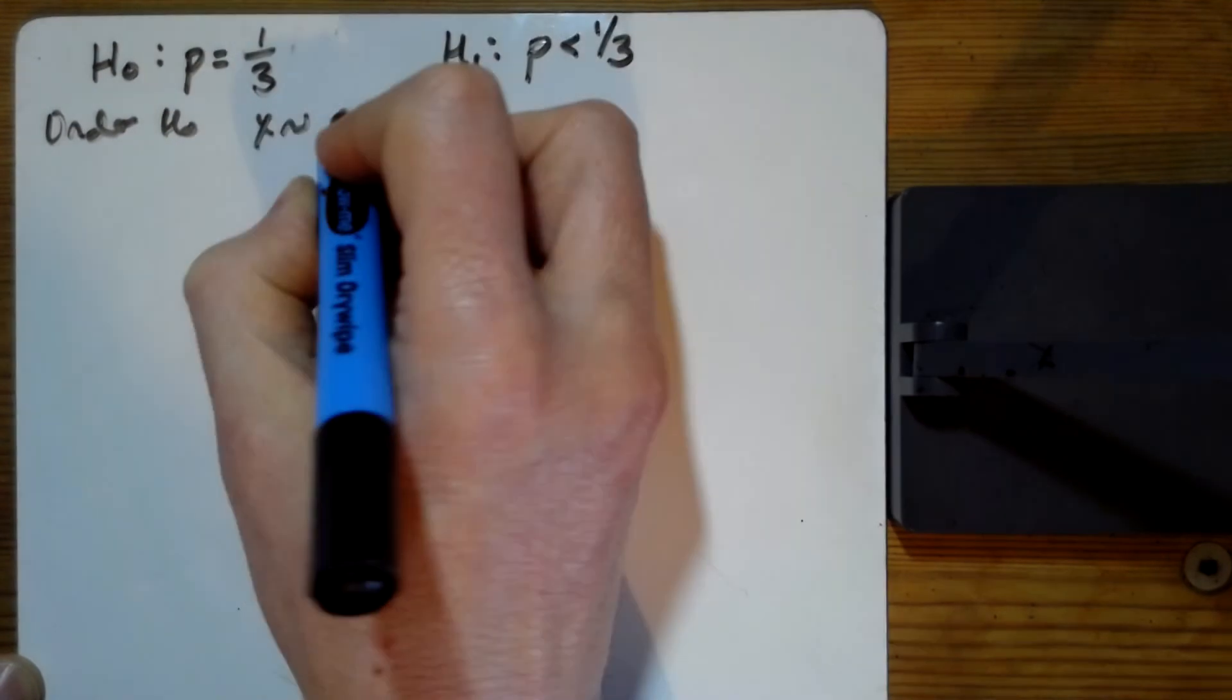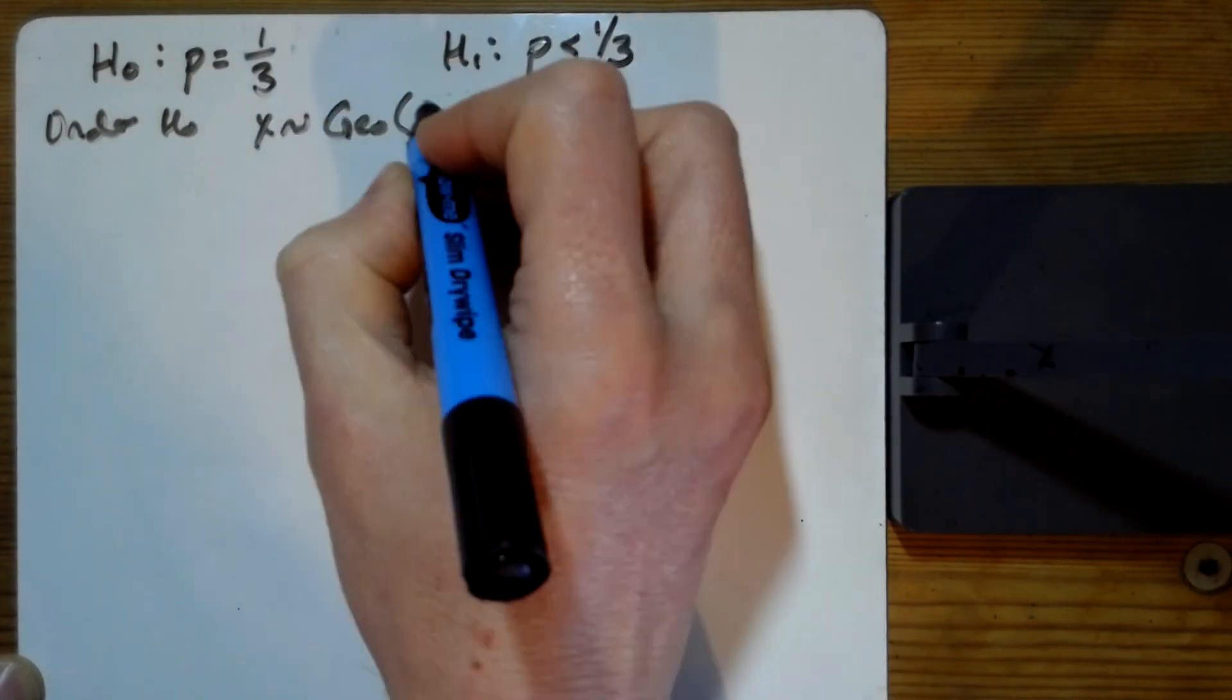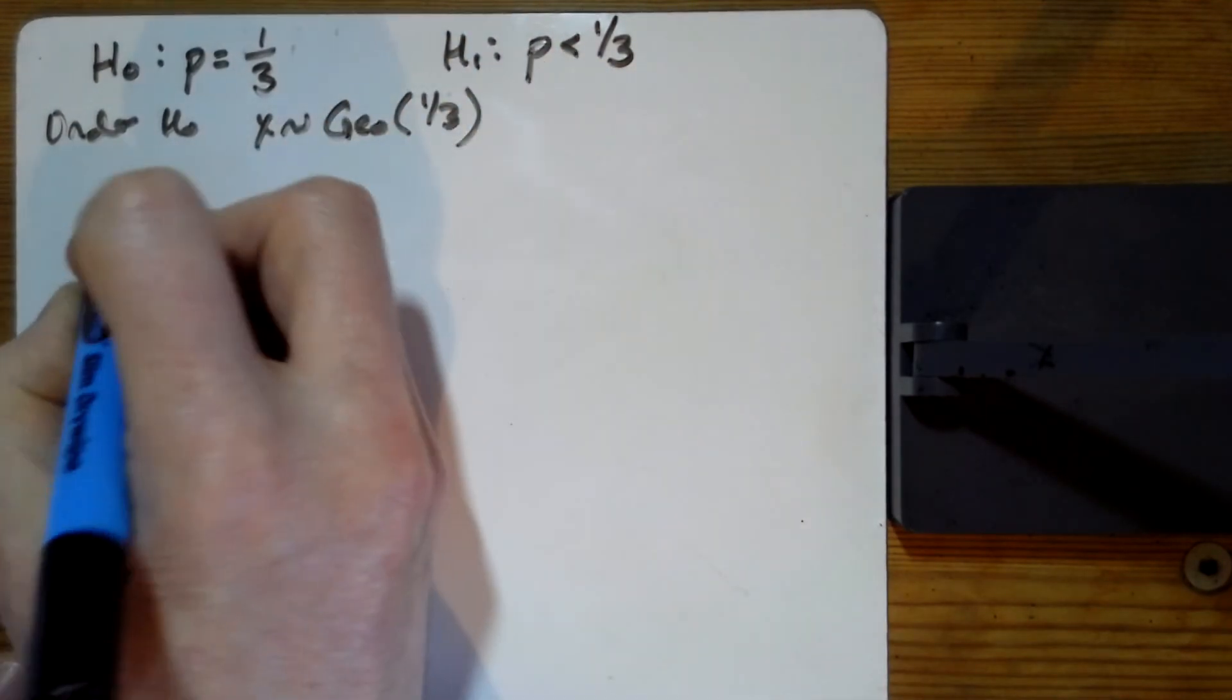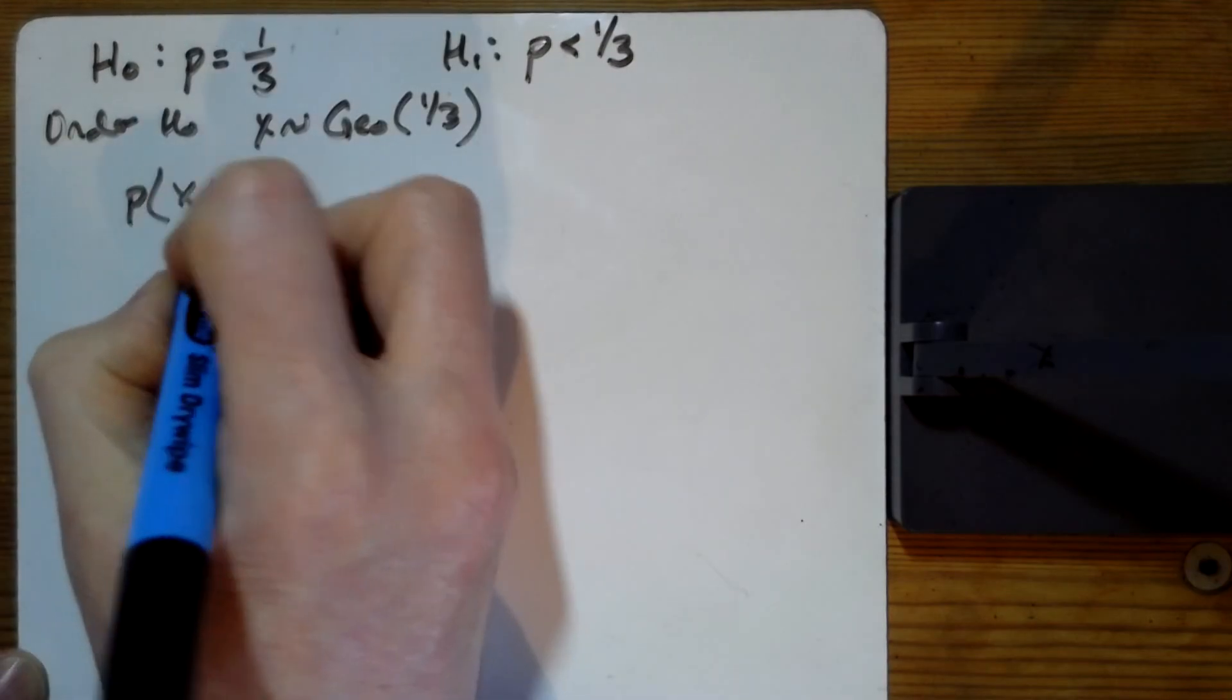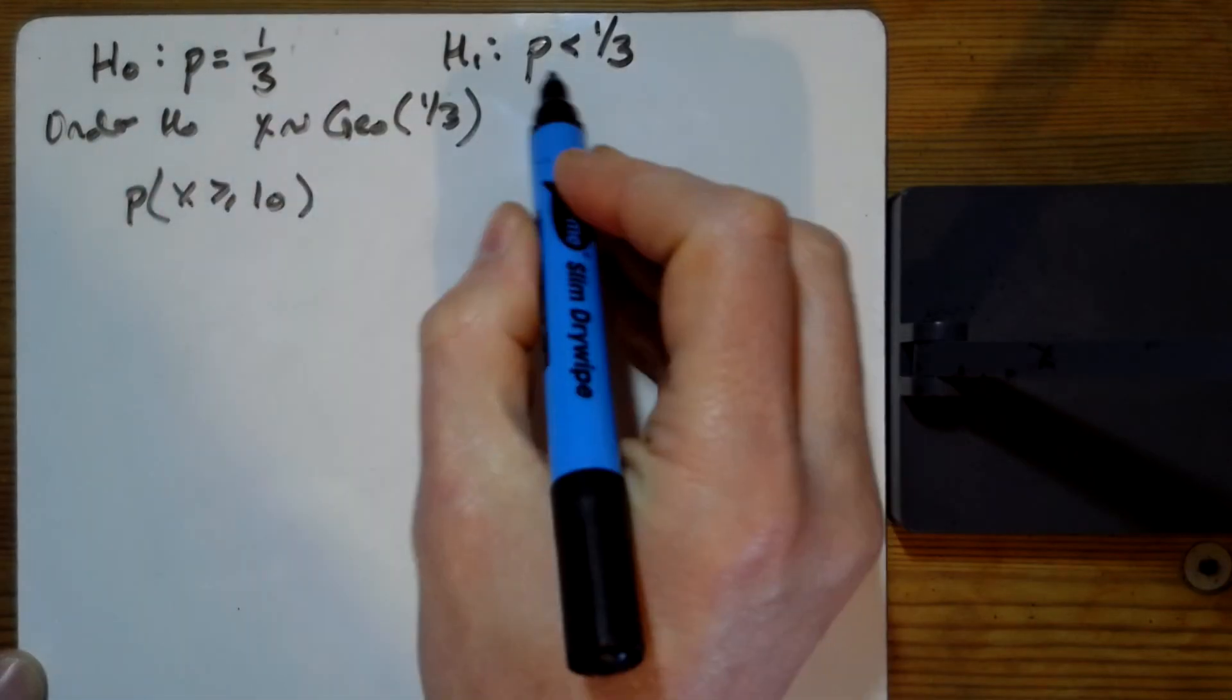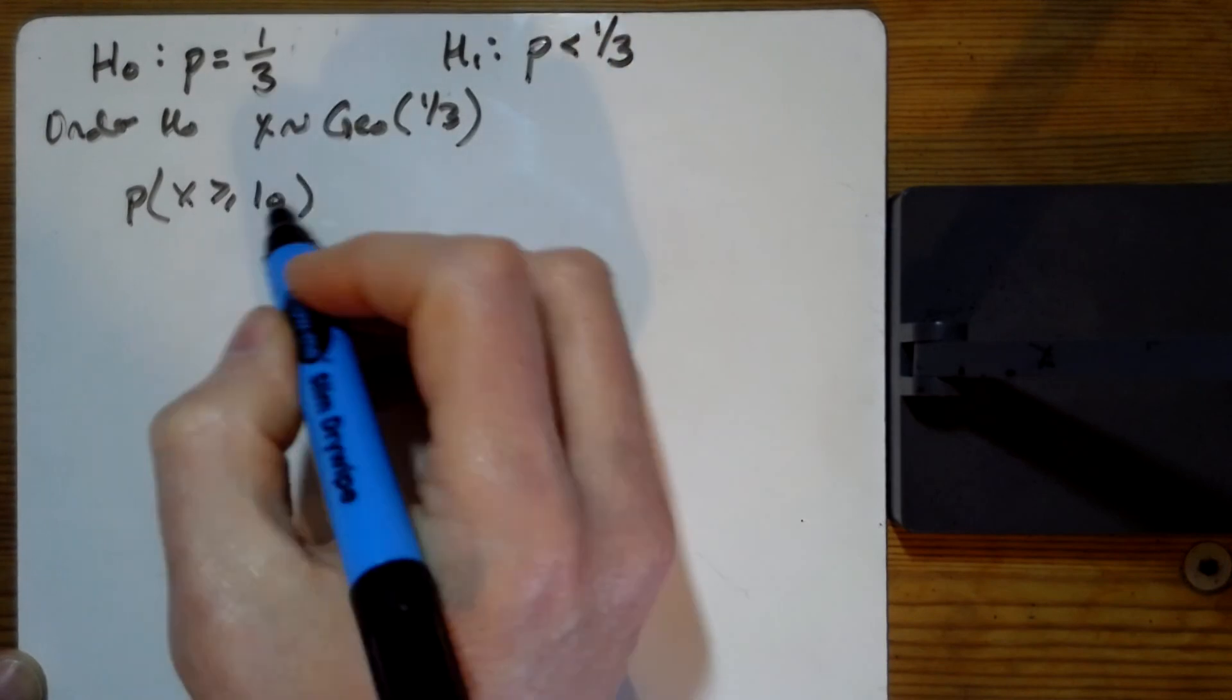then X is a geometric with the probability of a third. And we're trying to see, well, at what value, how many goes would it take until we started saying that this is rubbish? So we're trying to see how many.